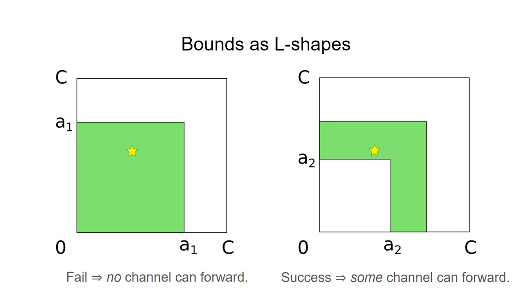Then the attacker makes the second probe, depicted on the right, with the amount A2, and this probe now succeeds, meaning that there is at least one channel between Alice and Bob with sufficient balance to forward this probe.